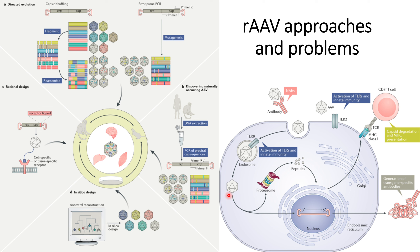The gene of interest that is available in the adeno-associated virus will be converted into peptide, and those peptides will then go to the major histocompatibility complex, from where the antigen of these peptides will be transferred to the CD8+ T cells. This will activate the human immune response against those specific antigens. Simultaneously, TLR will activate the innate immune system, and those AAV that reach the nucleus form a transgene product which also triggers the immune response, causing antibodies specific to this transgene to be produced by the host immune response.